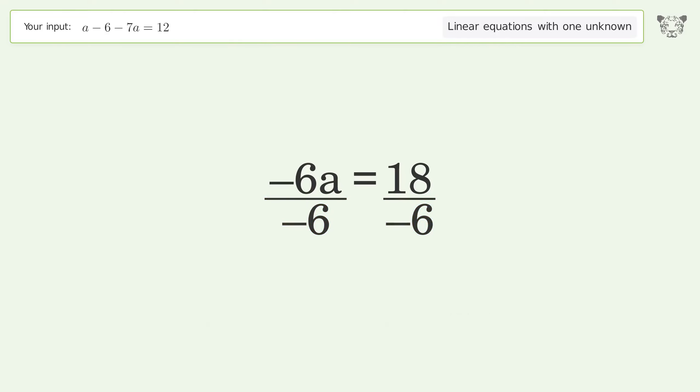Isolate the a. Divide both sides by negative 6. Cancel out the negatives.